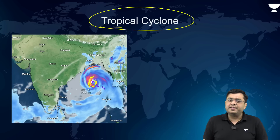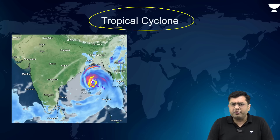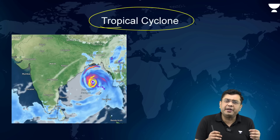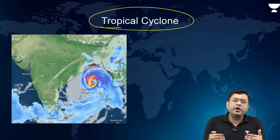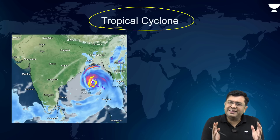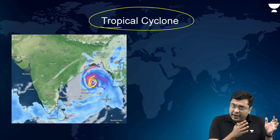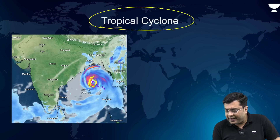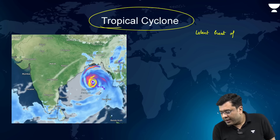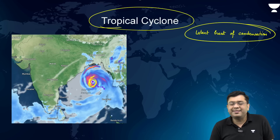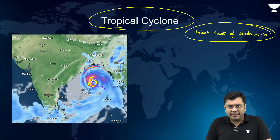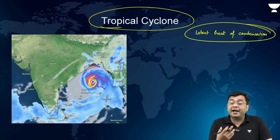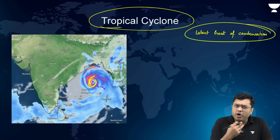This cyclone has developed over the Bay of Bengal. As is the case with tropical cyclones, they can develop only over water bodies because water bodies provide enough moisture. That moisture undergoes condensation as air rises up, releasing a significant amount of latent heat of condensation. This latent heat — released every time moist air undergoes condensation and leads to cloud formation — is the driving force behind cyclonic development. That is why the longer tropical cyclones spend over water bodies, the stronger they get.